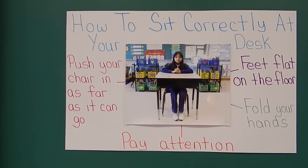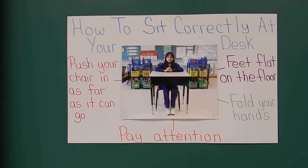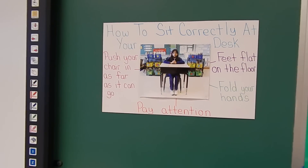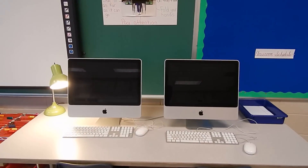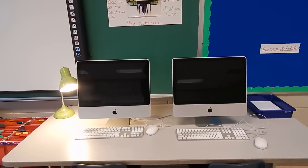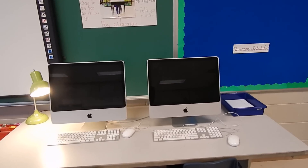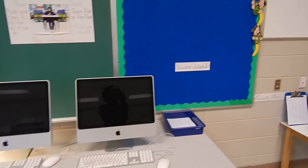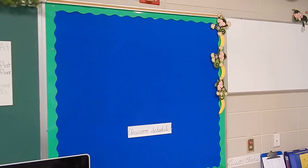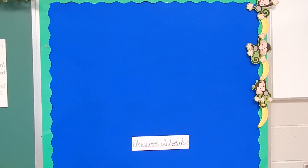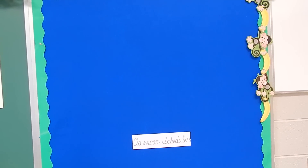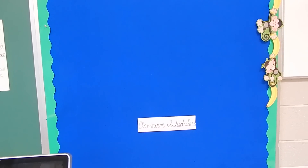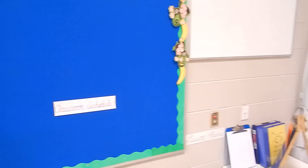Above my smart board I've got posters, and on the other side of the smart board there's another procedure poster — how to sit correctly at your desk. I've got two computers, which I'm excited about. On this bulletin board I'm going to put important news, information, different data charts. And now I'm back to the beginning!